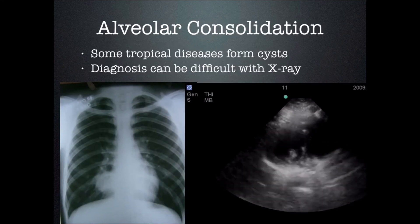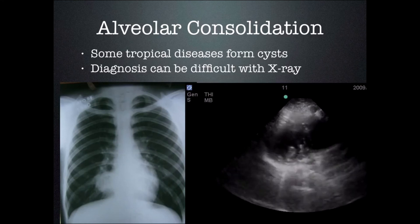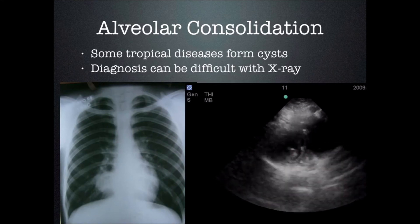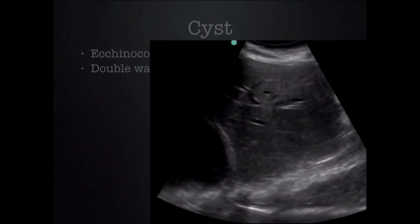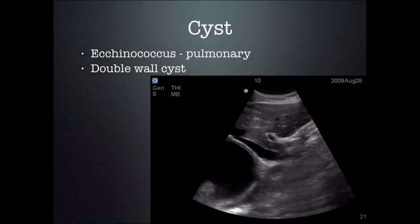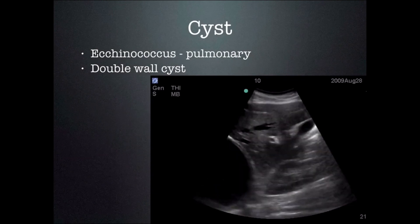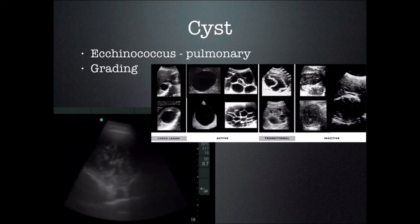Some tropical diseases will also form cysts in the lungs. You can make this diagnosis with CT scan, but you may not have a CT scanner available, and on chest X-ray it can be difficult to characterize the mass. Echinococcal cysts have a double wall — here we have a diaphragm-based pulmonary cyst with a double wall, so we would feel fairly certain this is an echinococcal cyst if you were in an endemic area. These cysts follow the same grading scale as those found in the abdomen: either the WHO classification for echinococcus or the Gharbi classification. Here we see a cystic mass in the lung that is probably transitional or moving towards inactive.